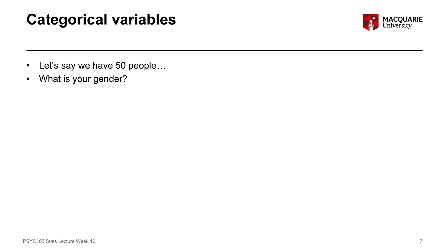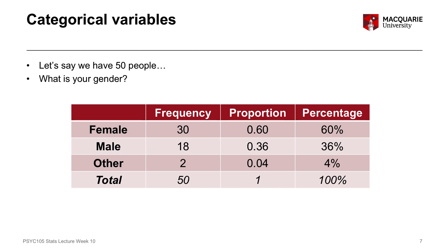To give another example with the same 50 people, asking about gender: 30 identified as female, 18 as male, and 2 as other. The proportion of females is 0.6 or 60%, males is 0.36 or 36%, and other gender is 0.04 or 4%. It's the same data expressed three different ways: the raw frequency, the proportion ranging from 0 to 1, and the percentage ranging from 0 to 100.